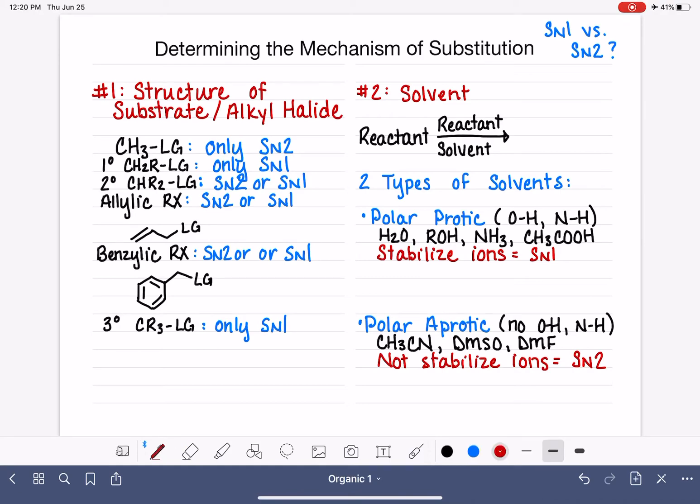Again, we want a polar protic solvent for SN1 to stabilize the carbocation so that it makes it easier for the molecule to form the carbocation. We want a polar aprotic solvent for SN2 so that it doesn't stabilize our nucleophile and it leaves that nucleophile reactive so it can go ahead and attack.